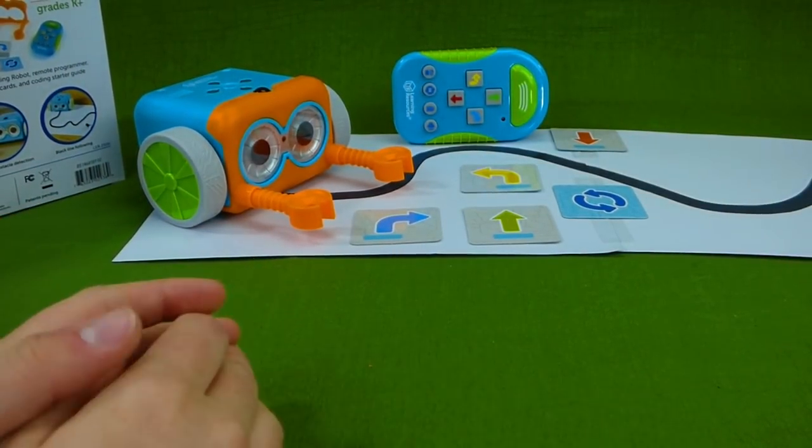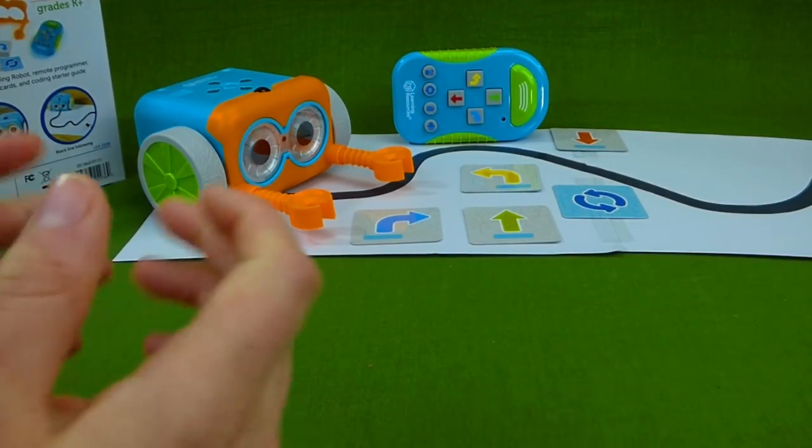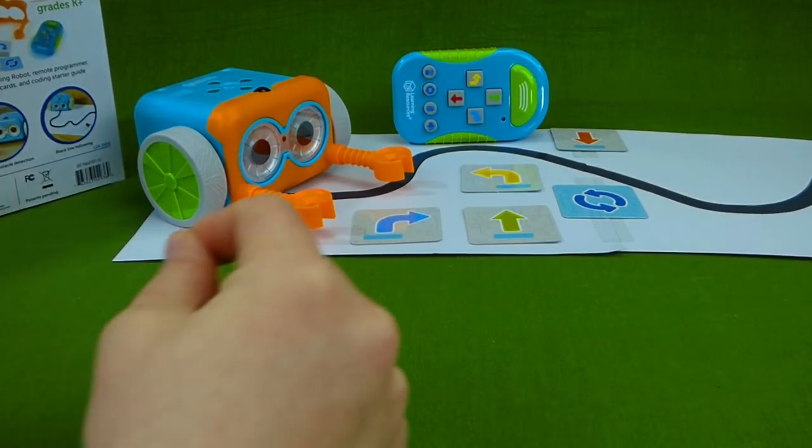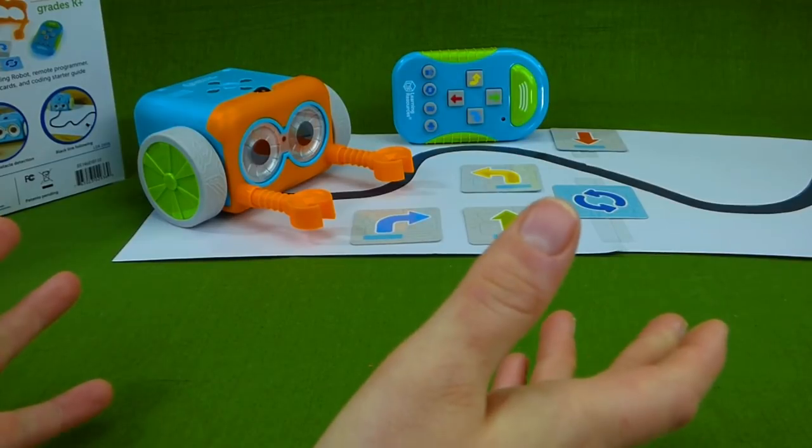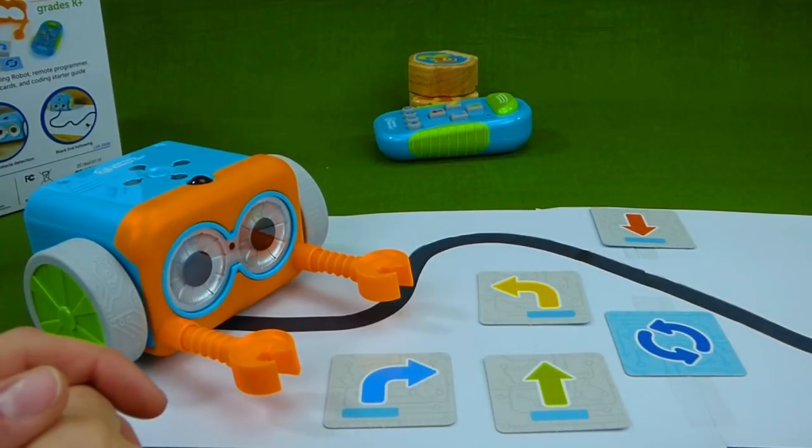Look at how cool he looks. He will actually follow that black line. And it is really neat. You can draw whatever you want. And he will go on your black line. So we're gonna show you everything about this cool toy. So let's get started.